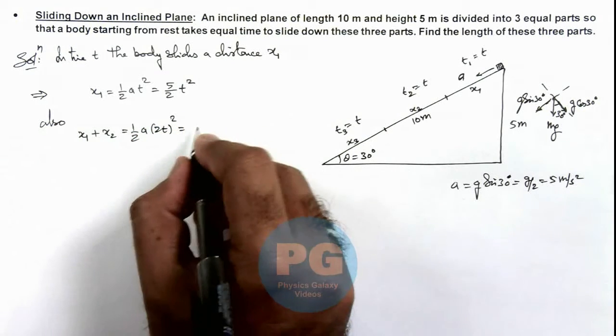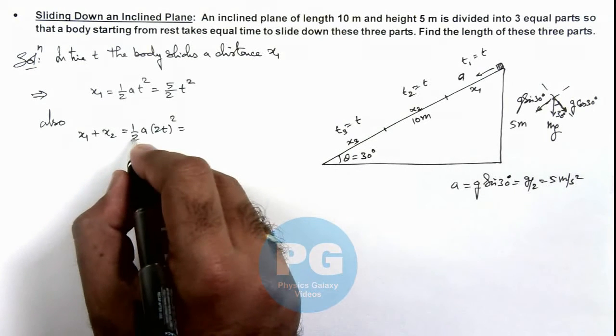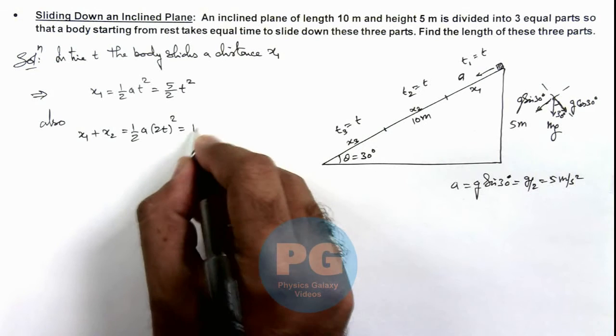So this can be written as, here a_y again I can write as 5, so this is 5 by 2 multiplied by 4, so that is 10 t squared.